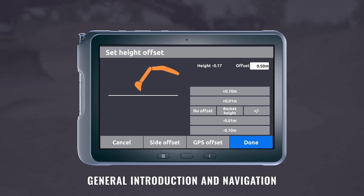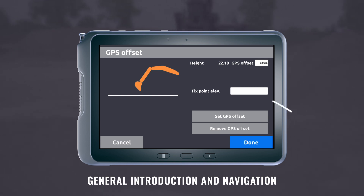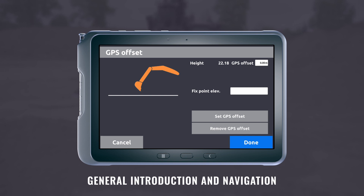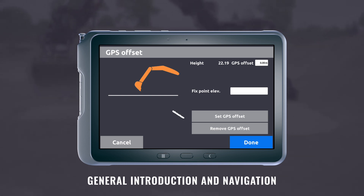You can also use a GPS offset. Insert the elevation of the fixed point and press set GPS offset. The difference is indicated in the top right corner. You can remove the GPS offset again here.